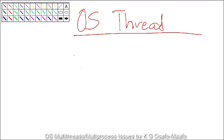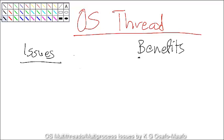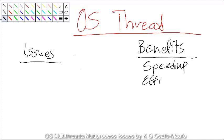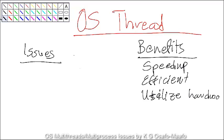Good morning. Today we'll be discussing operating system threads, and in particular issues that we face when we want to use threads. Of course there are many benefits if you want to use multiple threads or multiple processes — you get a lot of speed up, you can make things more efficient, you can use more resources, and utilize more hardware. But before you get these benefits, there are many issues that do come up.